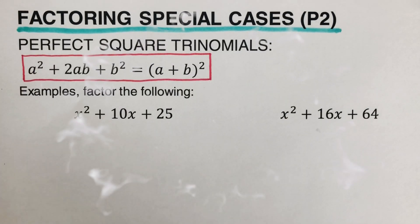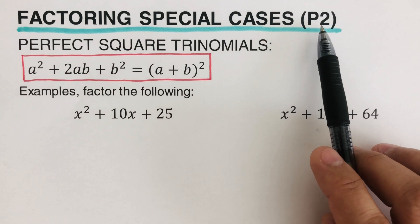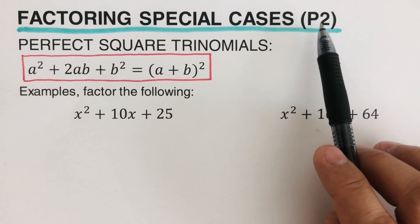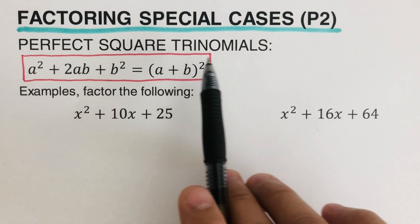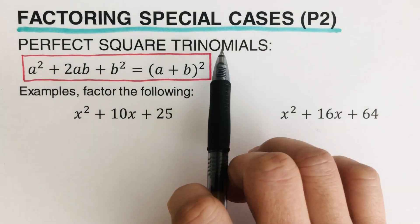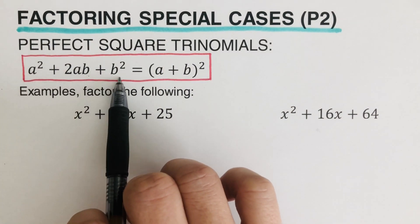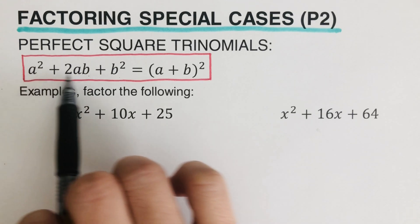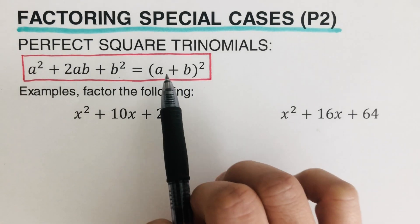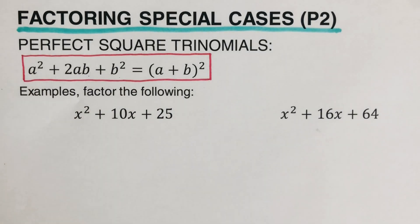Hello everyone, today we will be factoring special cases. This is the second part — I will put the link of the first part in the description box below. This second part will focus on perfect square trinomials. A trinomial has three terms, and if it follows this pattern, the factored form would be (a + b) squared.